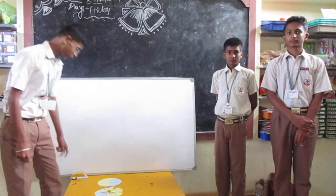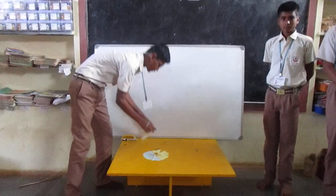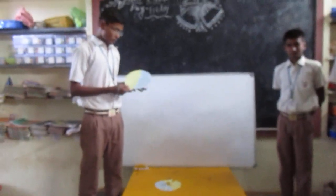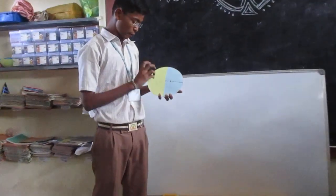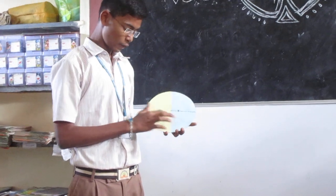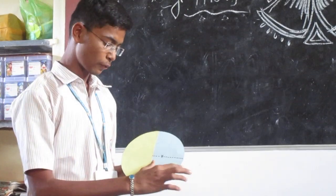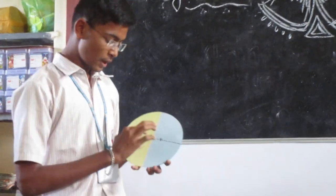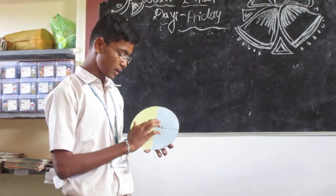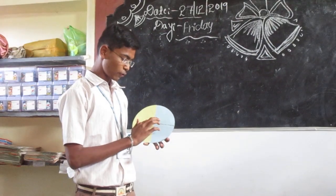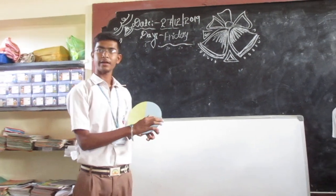Here we have two circles. This circle is made up of blue and yellow. The yellow indicates half of the circle and the blue indicates the other half. This black dotted line indicates the center of the circle to the circumference — that is the radius.